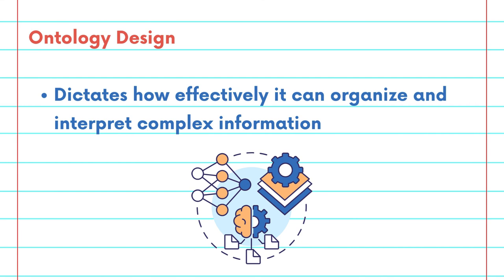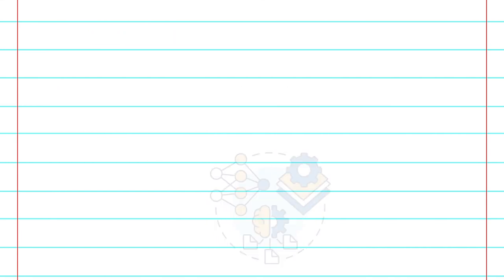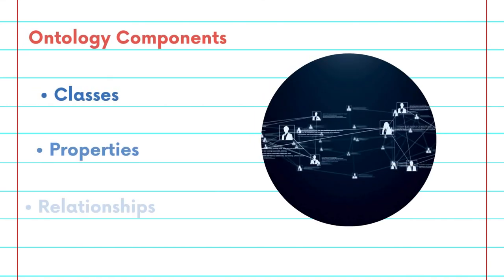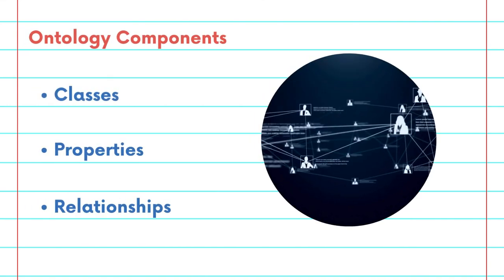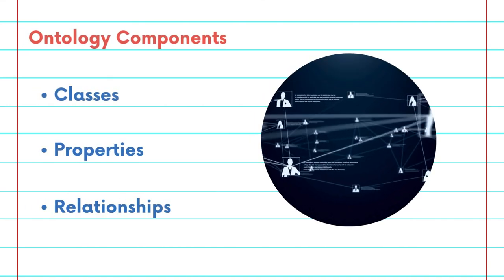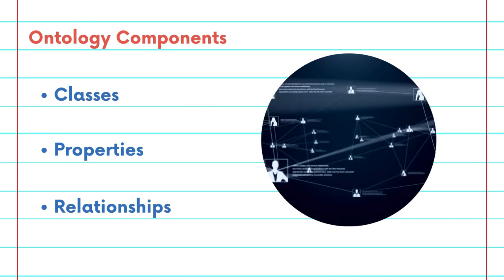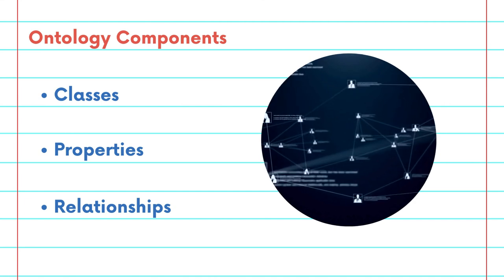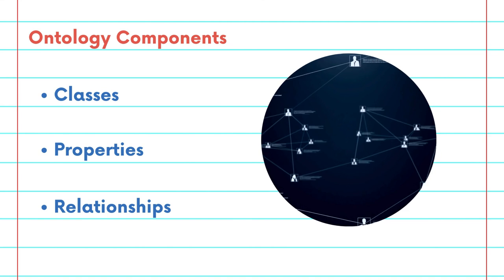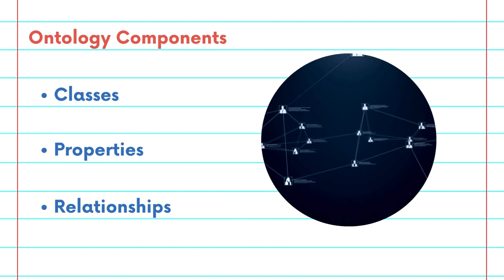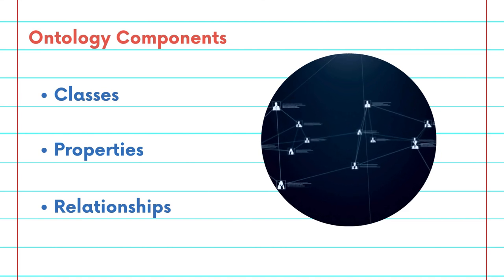The design of an ontology dictates how effectively it can organize and interpret complex information. At its core, an ontology consists of classes, properties, and relationships. These elements form the basic building blocks that accurately reflect the knowledge within a specific domain.